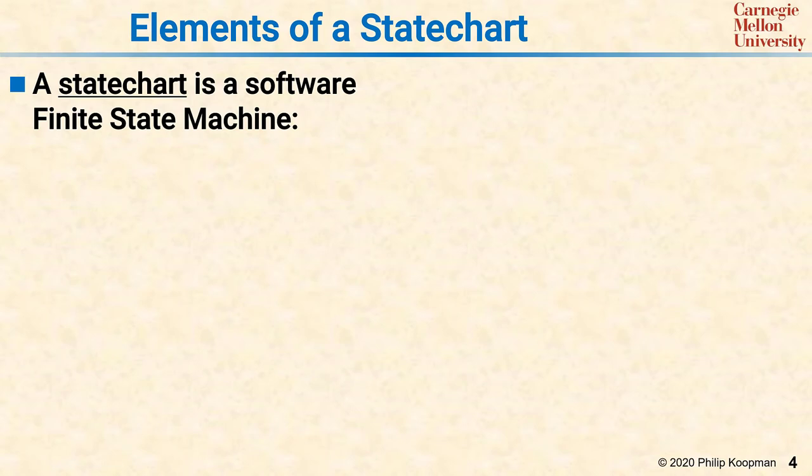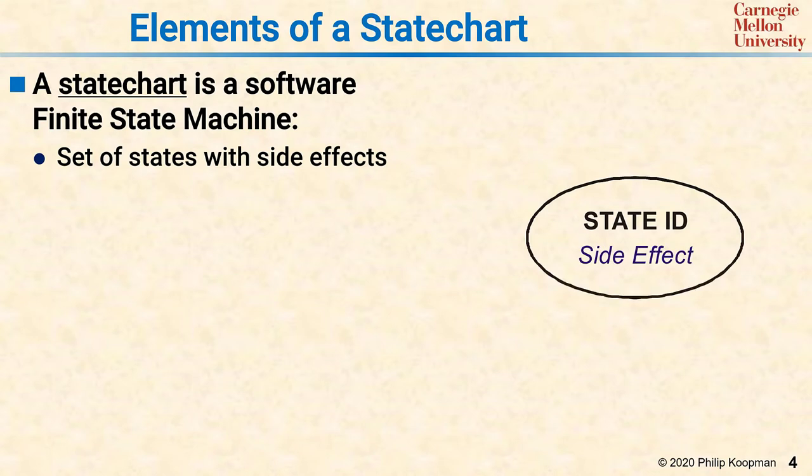A state chart is the software version of a finite state machine, which is a formalism commonly used in hardware design. A state chart contains a set of states with side effects. That means that each bubble in a state chart is a state that either the system is in or not in. Any side effect is something that that state does as a result of being in the state.